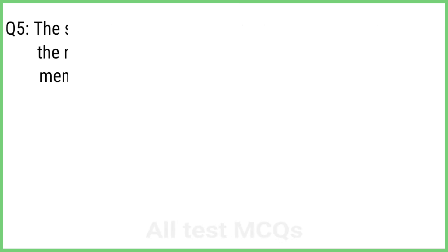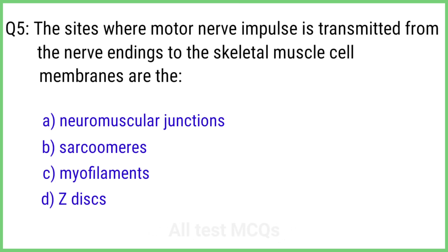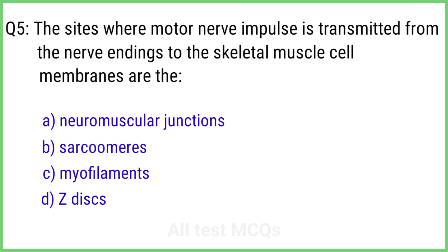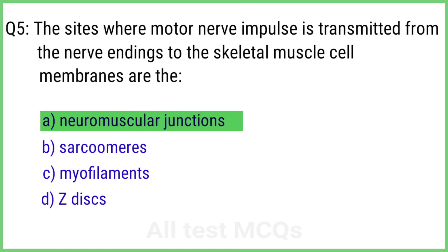Question 5. The sites where motor nerve impulses are transmitted from the nerve endings to the skeletal muscle cell membranes are the? The right answer is option A: Neuromuscular junction.